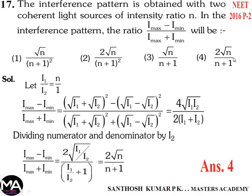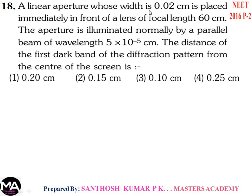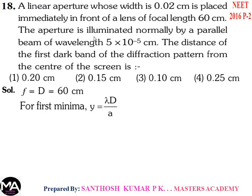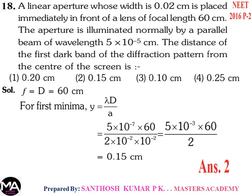Question 18: A linear aperture of width 0.02 cm is placed in front of a lens of focal length 60 cm. Illuminated by wavelength 5 × 10⁻⁵ cm. Find the distance of the first dark band from the center. For first minima: y = λD/a = (5 × 10⁻⁵ × 60) / 0.02 = (5 × 10⁻⁷ × 60) / (2 × 10⁻²) = 0.15 cm. Therefore option 2: 0.15 cm.